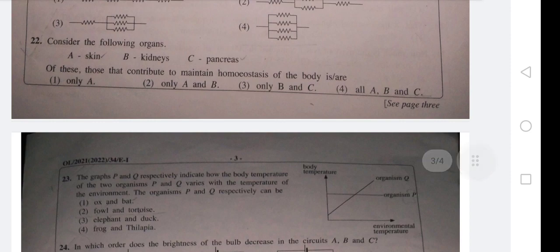Question 22: Consider the following organs - skin, kidneys, and pancreas. Of these, those that contribute to maintain homeostasis of the body. Now homeostasis means maintaining constant internal environment in the body. So skin is also helping to maintain the temperature.